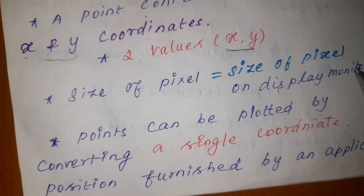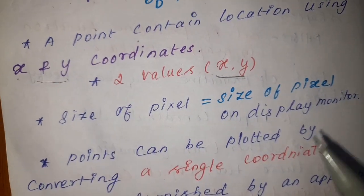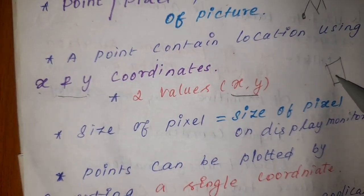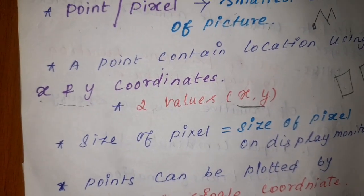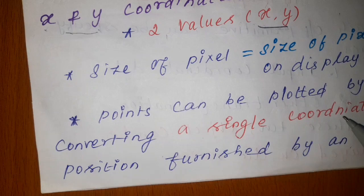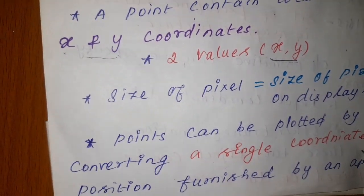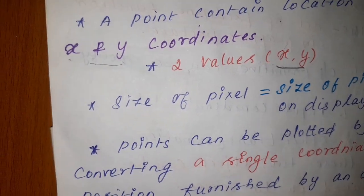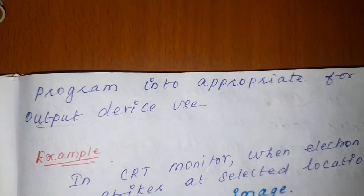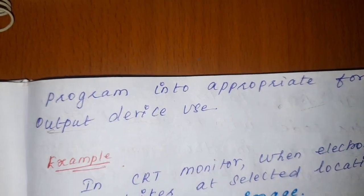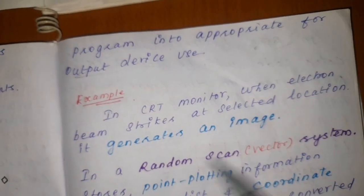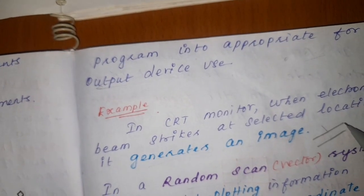The size of the pixel is equal to the size of the pixel on the display monitor. Pixel size depends on your display device — whether you are using a mobile phone, laptop, TV, or PC, each has a different pixel size. A point is plotted by converting a single coordinate position from the application program into an appropriate output device, for example a CRT monitor.